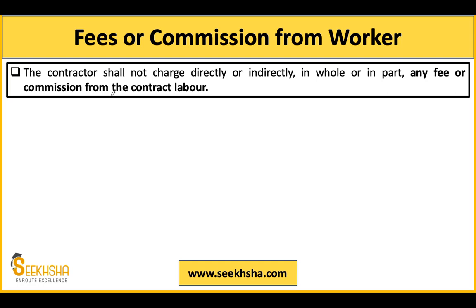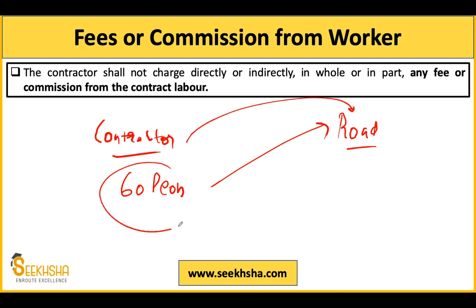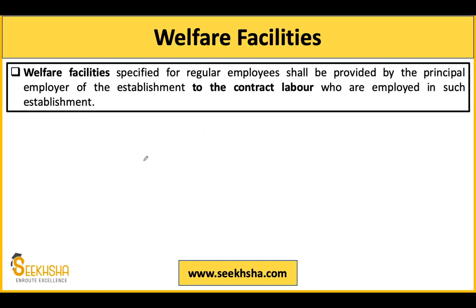A contractor cannot take any commission from any employee or contract labor. For example, if a contractor has 60 workers and gets a contract for road construction, the contractor takes his commission from the agency that gave him the contract — not from the 60 workers. The contractor cannot go to the workers and demand money because he gave them work. No commission or extortion from labor is allowed.